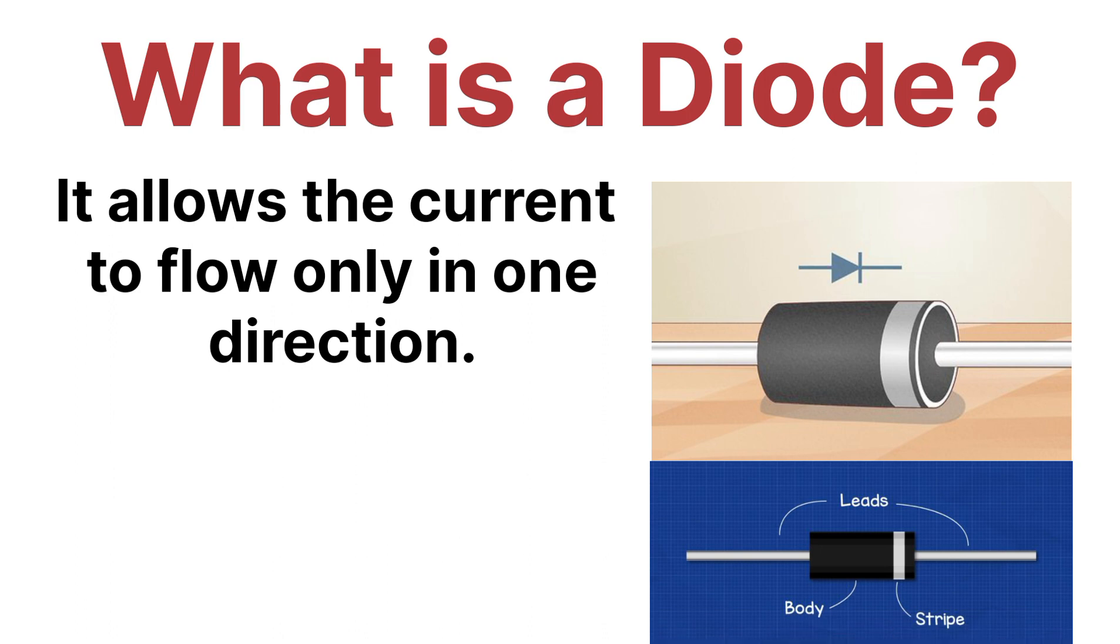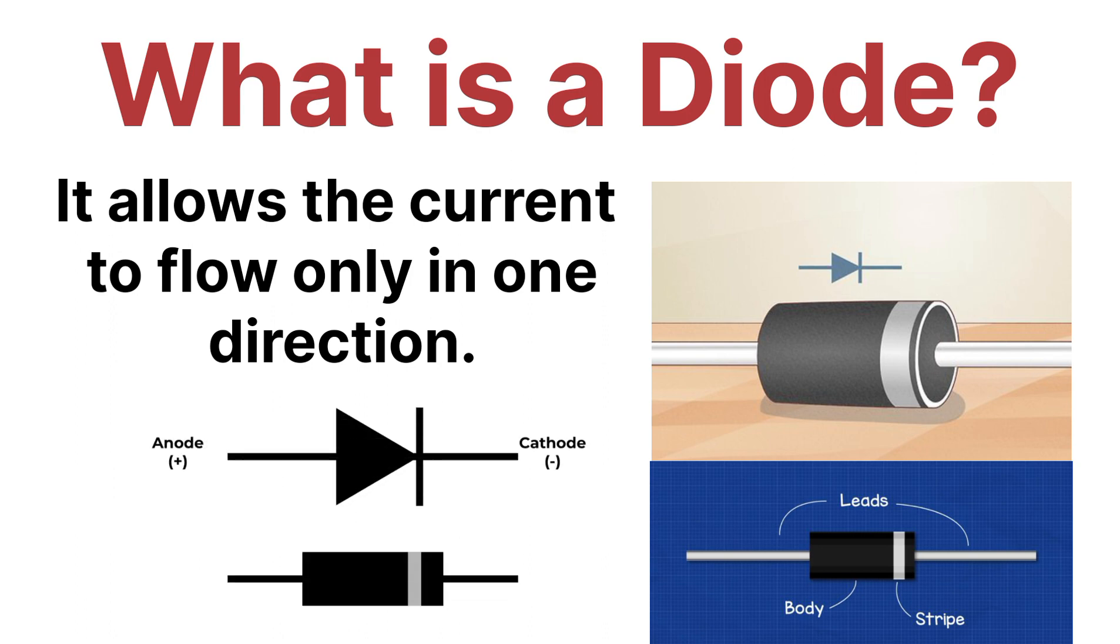A diode has two terminals. One is called the anode, which is the positive terminal, and the other is called the cathode, which is the negative terminal. The current always flows from anode to cathode, from positive to negative.